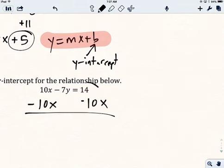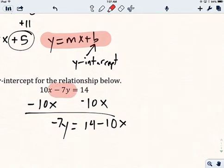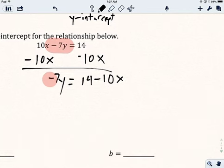I'll remember that these are not like terms. So I'll get negative 7y equals 14 minus 10x. And be wary here. If it's minus 7y here, the negative sign has to come down. Now I have negative 7y equals 14 minus 10x.